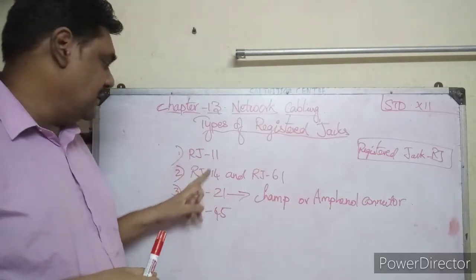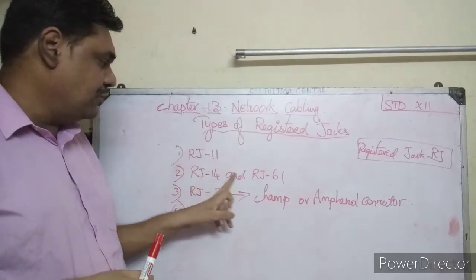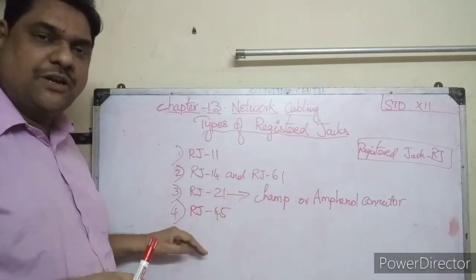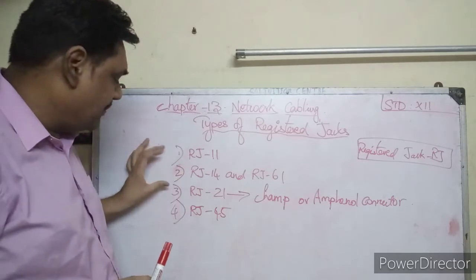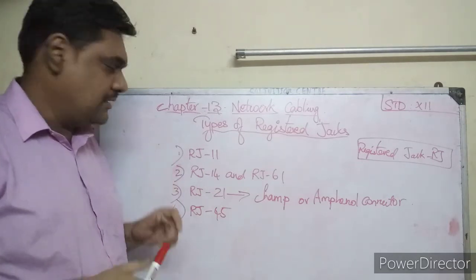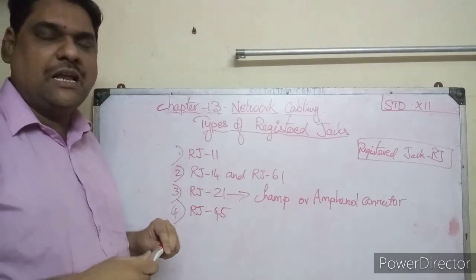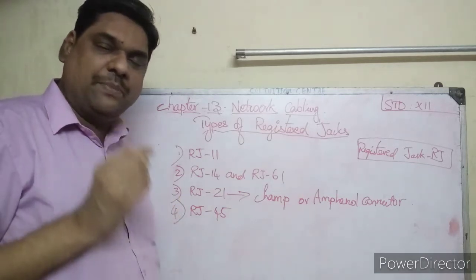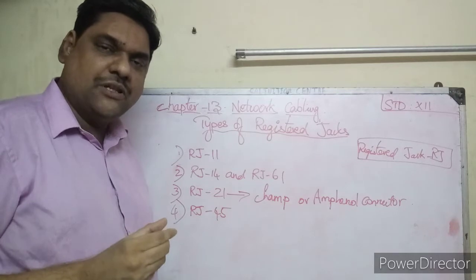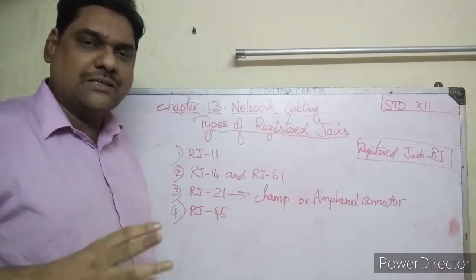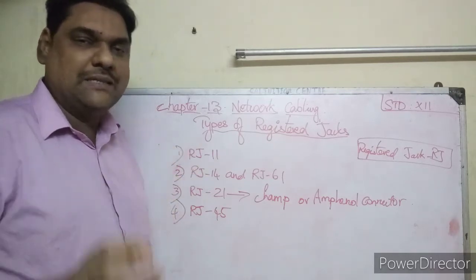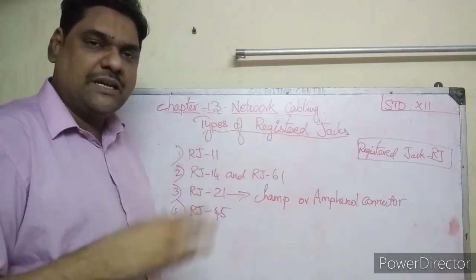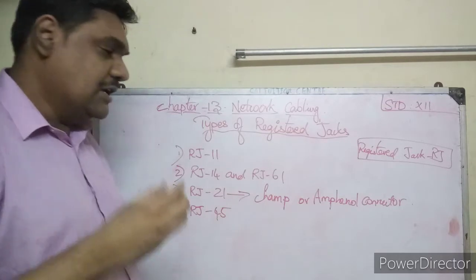The types of registered jacks are: RJ-11, RJ-14, RJ-61, RJ-21, and RJ-45. The RJ-11 is the first one. It is a six-pin connector and is mainly used for telephone wires — for connecting telephone devices and transferring voice messages or voice data.